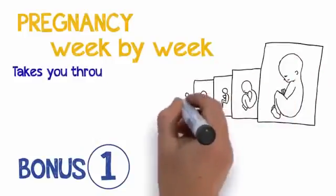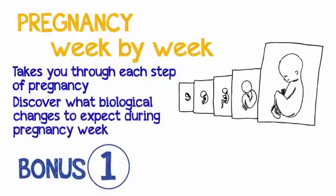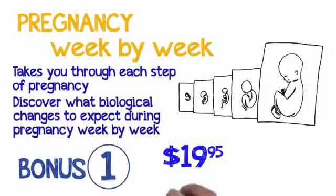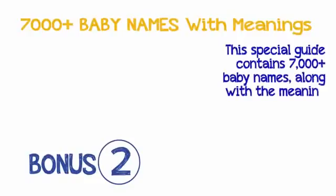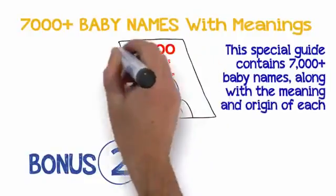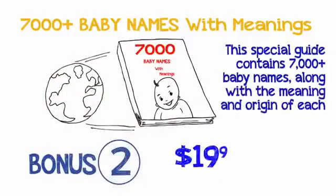For a limited time I'm also giving away incredible free bonuses. Bonus number one: Pregnancy week by week. This exclusive report takes you through each stage of pregnancy with a complete set of images of the developing baby at different stages. $19.95 value, yours free. Bonus number two: 7000 plus baby names with meanings. $19.95 value, yours free.